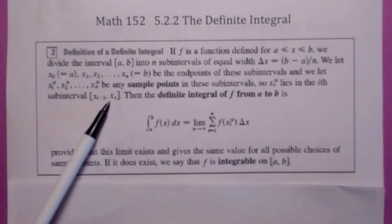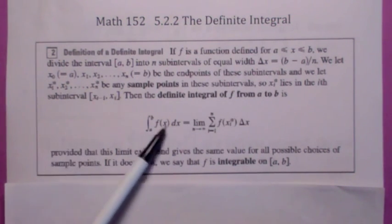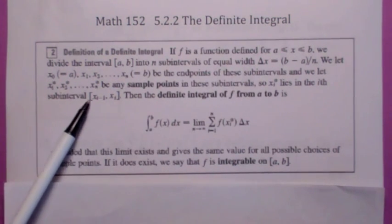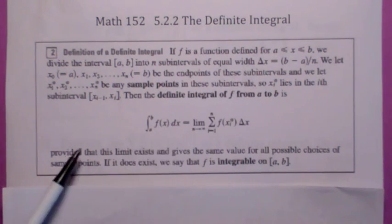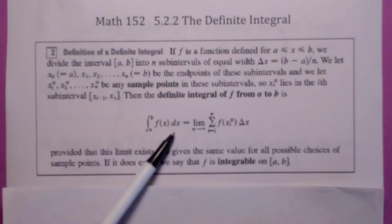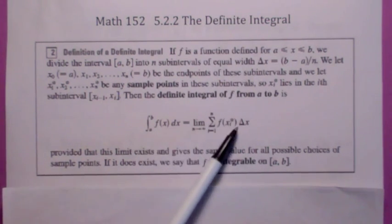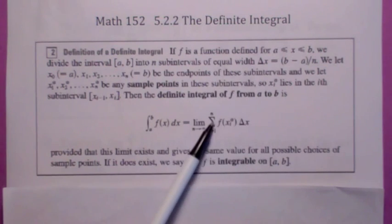x sub i star can be any x value in the i-th sub-interval. We're used to using the right endpoint, in which case x sub i star would be x sub i, but technically you could use any value of x. The dx just tells you that you're partitioning the x-axis into sub-intervals. The definite integral exists provided this limit exists and for any choice of x sub i stars, this limit has to give you the same value. If that's true, then we say the definite integral exists and it equals that value.